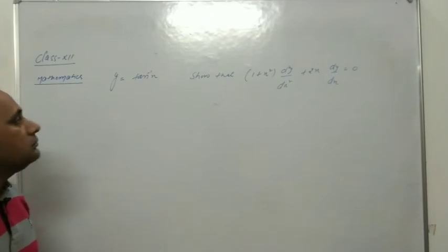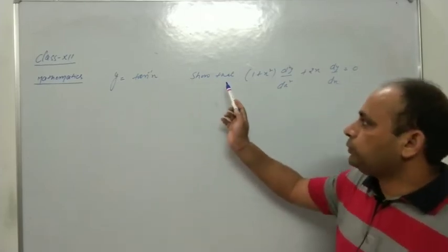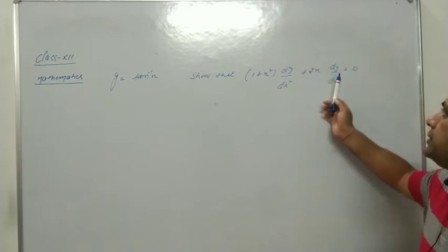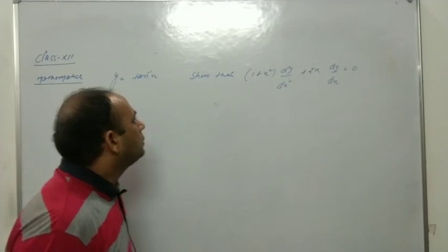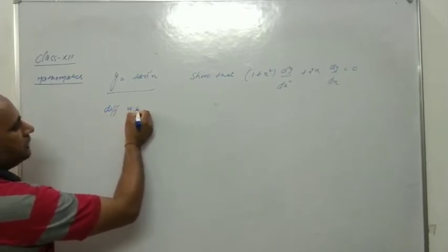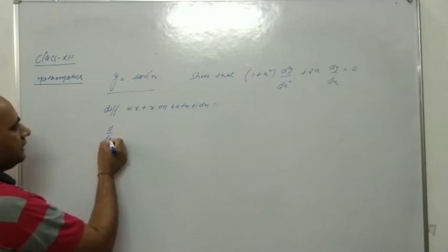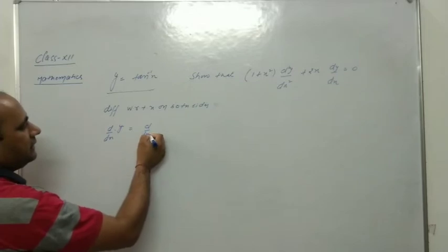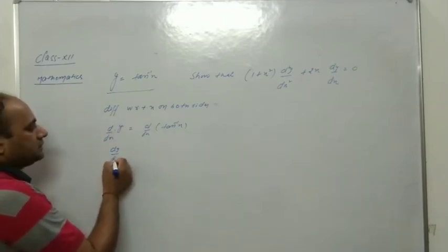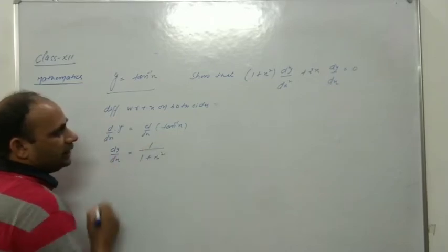Next problem: y = tan⁻¹(x). Prove that (1 + x²)·d²y/dx² + 2x·dy/dx = 0. If y = tan⁻¹(x), differentiate both sides with respect to x. We get dy/dx = 1/(1 + x²), which is the standard derivative of tan⁻¹(x). Transposing: (1 + x²)·dy/dx = 1.